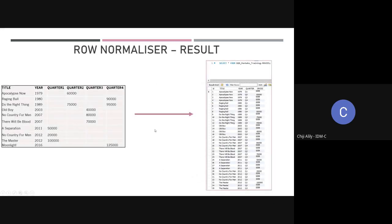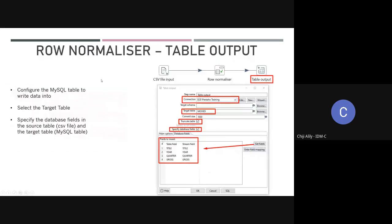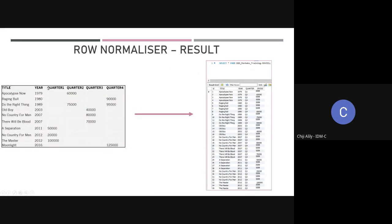Here's the result when I normalize the data — i.e., pivot it. On the left side is the denormalized data from the CSV file. I have the CSV file input, the row normalizer step, and the table output step that writes into the MySQL table. Here's the data in the CSV file, and here's the output when written into the MySQL table: the title, year, quarter, and gross fields. It's taking the denormalized data and pivoting it, normalizing it.